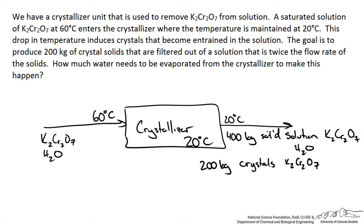So how much water needs to be evaporated from the crystallizer to make this happen? So we have a stream of water, some unknown flow rate we'll say MH2O. So where do we start with a problem like this?